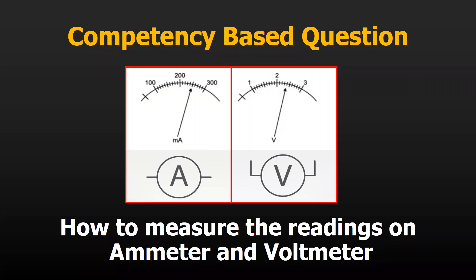Hello everyone. We are going to solve a competency-based question from the electricity chapter. You see here two readings: one is an ammeter and the other is a voltmeter. The ammeter will measure the current and the voltmeter will measure the voltage or potential difference.